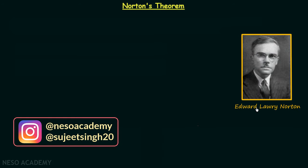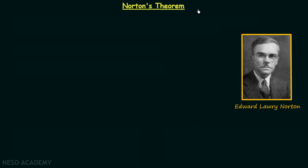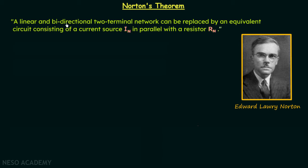Before we understand how to solve questions using Norton's theorem, we will first understand its statement. According to Norton's theorem, a linear and bidirectional two-terminal network can be replaced by an equivalent circuit consisting of a current source In in parallel with a resistor Rn.